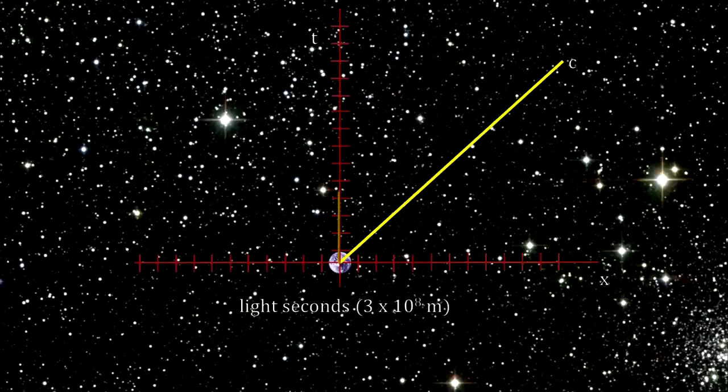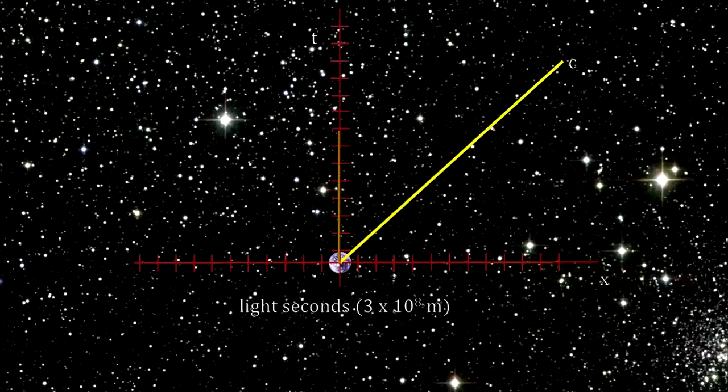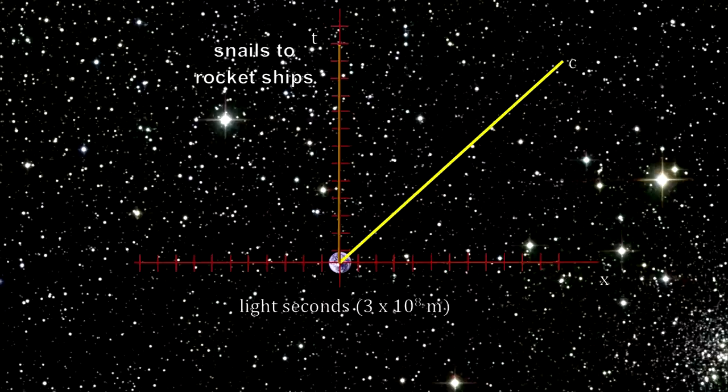At this scale, we cannot distinguish between the speeds achieved by snails, animals, cars, planes, and rockets from the line that represents standing still.